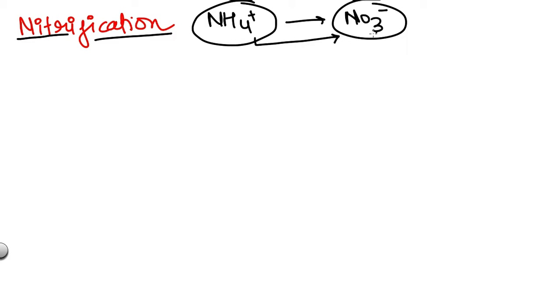So NH4+ is converted into NO3- which is nitrate ion during nitrification and this process occurs in two stages. The first stage is where NH4+ is oxidized.